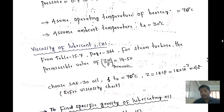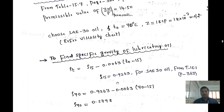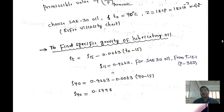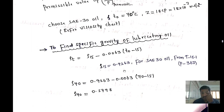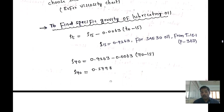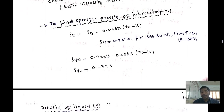Please refer to the desired data handbook to obtain these values. To find the specific gravity of the lubricant oil, use the formula: ρ₁₅ − 0.0063 × (T_operating − 15). For SAE 30 oil from table 15.1, page 363, ρ₁₅ = 0.9263. So specific gravity = 0.9263 − 0.0063 × (70 − 15) = 0.5798.